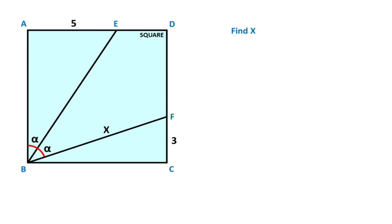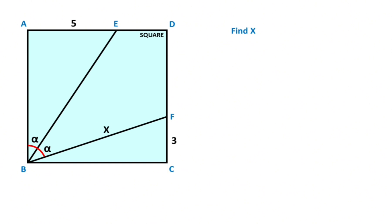Hello everyone. In this video we have a square; its length is given as 3, here is given as 5, and these two angles are given as equal. The question is: what is the value of x? We know that these two lines are parallel, so if here is alpha, that means here must also be equal to alpha. I want to represent one side of the square with y, therefore here is also y units.